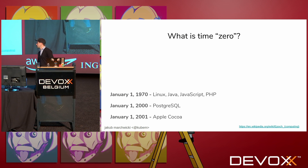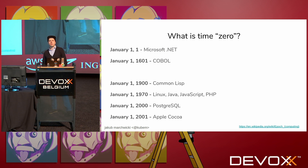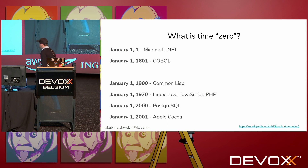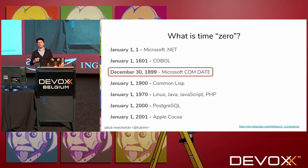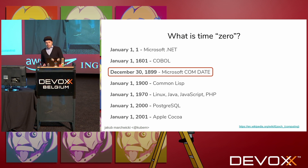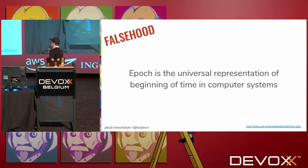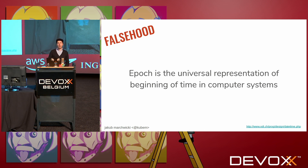For example, for Postgres database it's 1st of January 2000, and for Microsoft .NET it's 1st of January 1. Why not? And for us it was 30th of December 1899, because that was the database the data was coming from — Microsoft COM representation of data. So that brings me to the first falsehood: we believe that epoch is a universal representation of time zero in our computer systems. But it isn't.